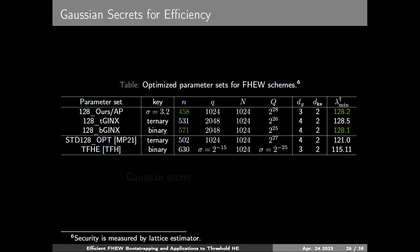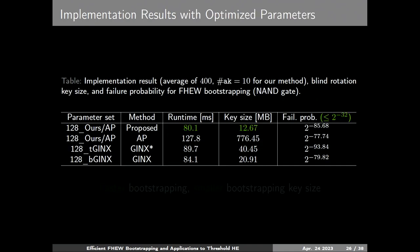The most interesting part: we actually improved efficiency using Gaussian secrets. In homomorphic encryption, it is very usual to use small keys for efficiency, even though it has weaker security. For example, in Jinx we use binary keys, and in CKKS we even use sparse secrets for better bootstrapping or small error growth. But by using Gaussian secrets, we can reduce the degree of the ciphertext from 517 to 450, which directly affects performance. We tried our best to find new parameters for each scheme with the newest version of the lattice estimator, and achieved the fastest runtime and key size.